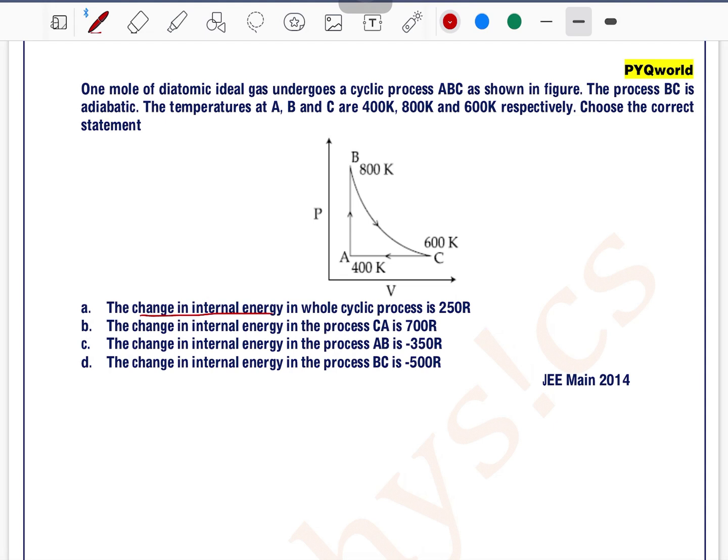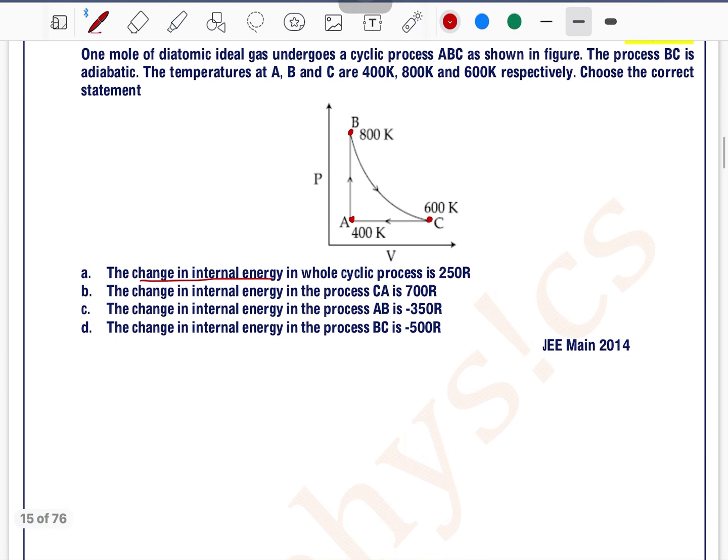In all options they have given change in internal energy. To find change in internal energy, we generally require temperature at each point. At point A temperature is 400K, at point B 800K, at point C 600K is given. We will deal with this. Now first we will discuss process AB.